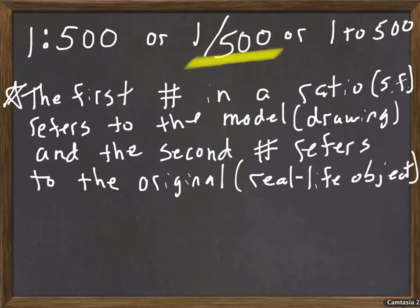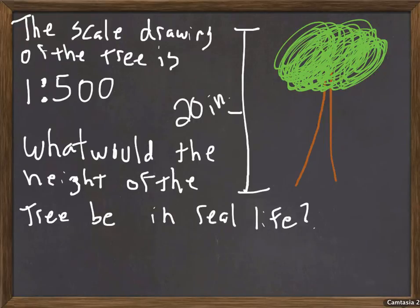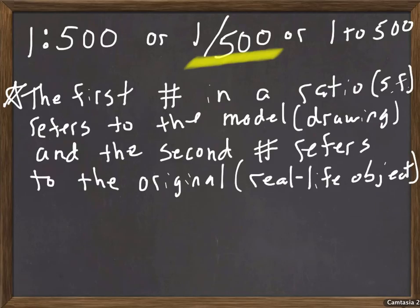For our example, let's go back to our example. You know we're given a drawing of a tree is 20 inches. Now if you use this scenario, the first number in ratio refers to the model or drawing. All right, now I have a drawing. Now what I want to do is I want to set a ratio and proportion using my scale factor.